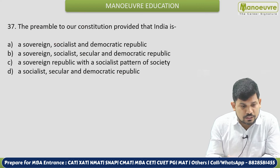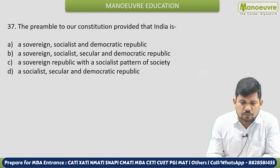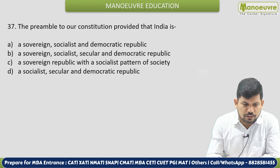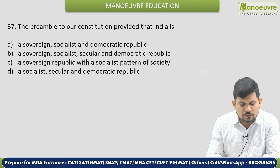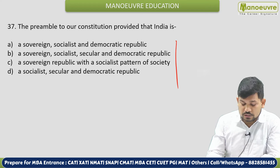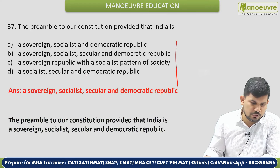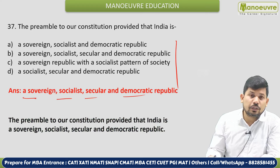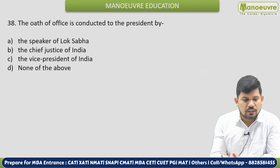Next: The preamble to our constitution provides that India is — Sovereign Socialist and Democratic Republic; Sovereign Socialist Secular and Democratic Republic; or Sovereign Republic with Socialist? You should have a basic understanding of the Preamble. India is a Sovereign Socialist Secular and Democratic Republic.